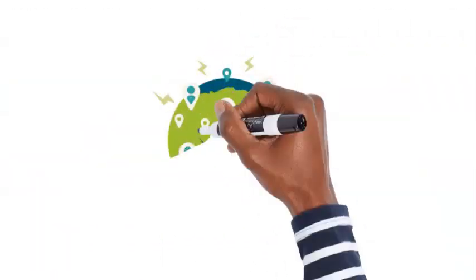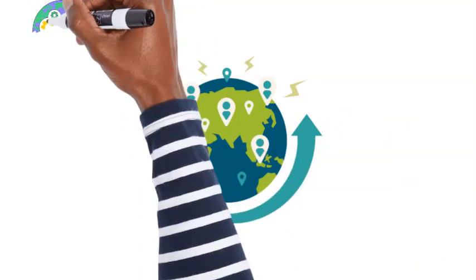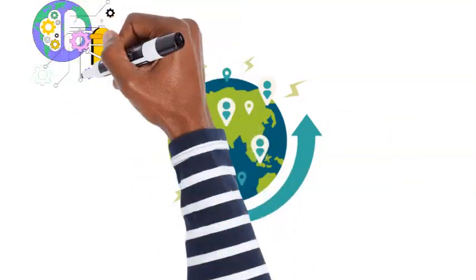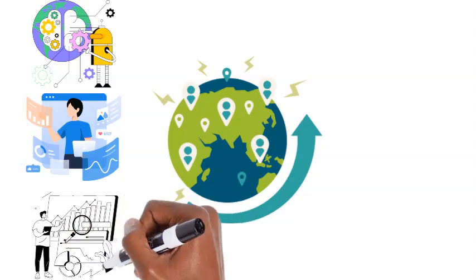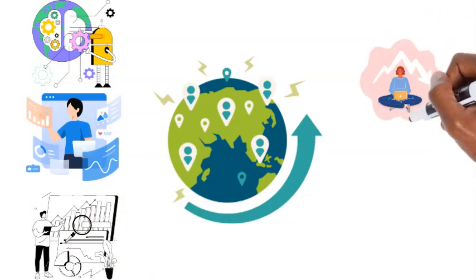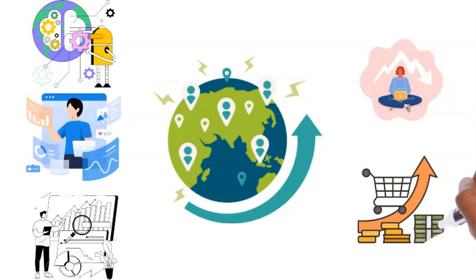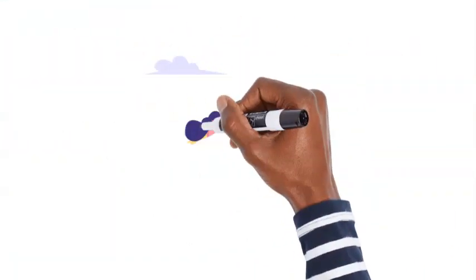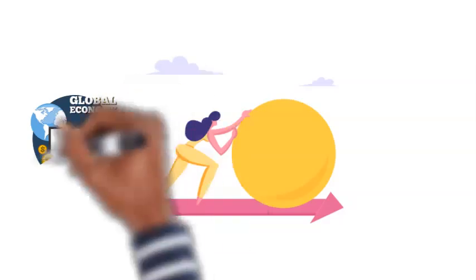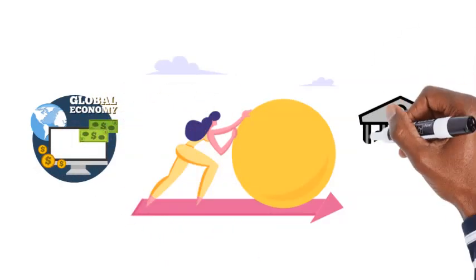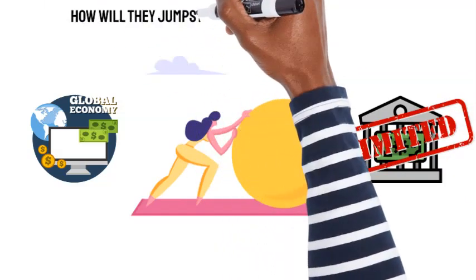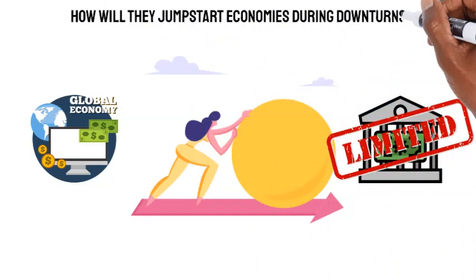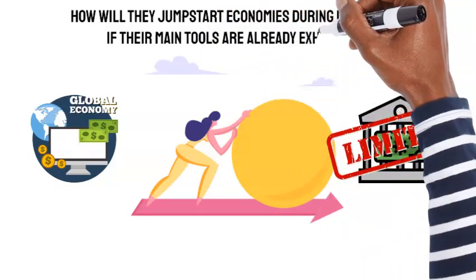Today's world has fundamentally evolved. We're in an era characterized by technological advancements, digitalization, and vast excess capacity. The older economic models that correlated low unemployment with high inflation don't necessarily apply anymore. But herein lies the challenge. As our global economy matures, the toolkit of central banks appears increasingly limited. How will they jumpstart economies during downturns if their main tools are already exhausted?